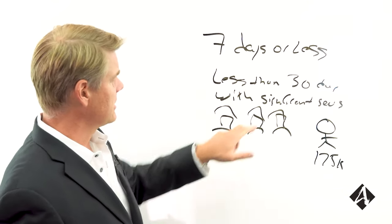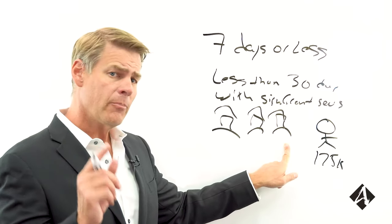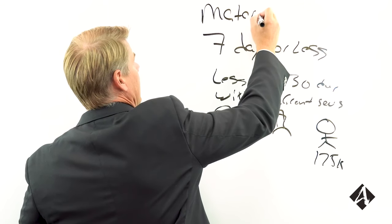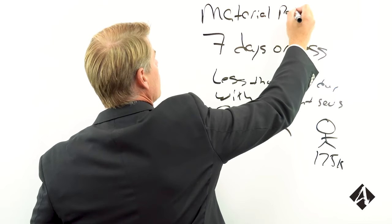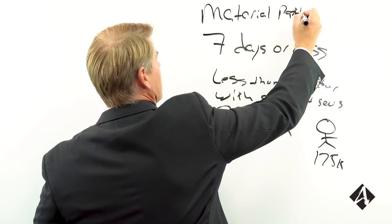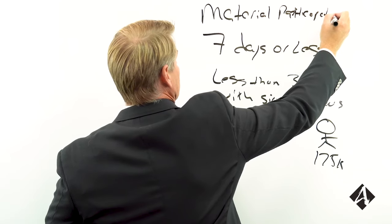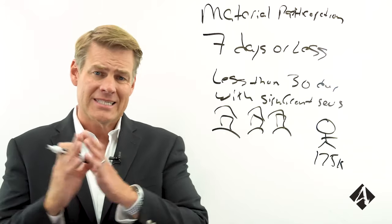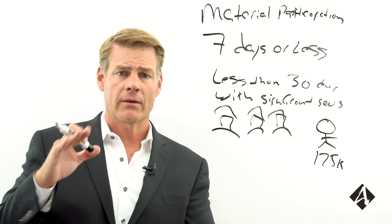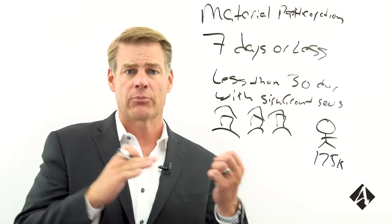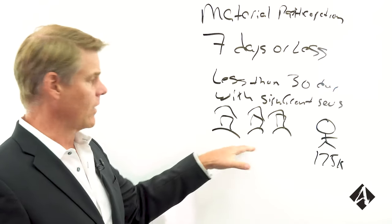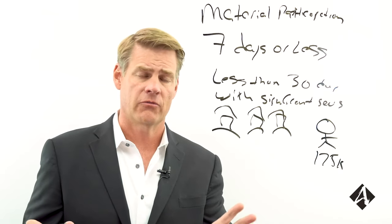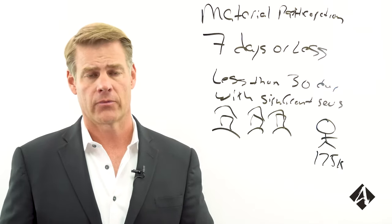Now, if you average seven days or less here, the other part of this test is what we call material participation. And there's a lot of rules around material participation. And what does that mean? So there's seven categories of what it means that you would materially participate in this rental activity here of short-term rentals. Now, the simplest one, the one I'm gonna focus on is the 100-hour requirement.